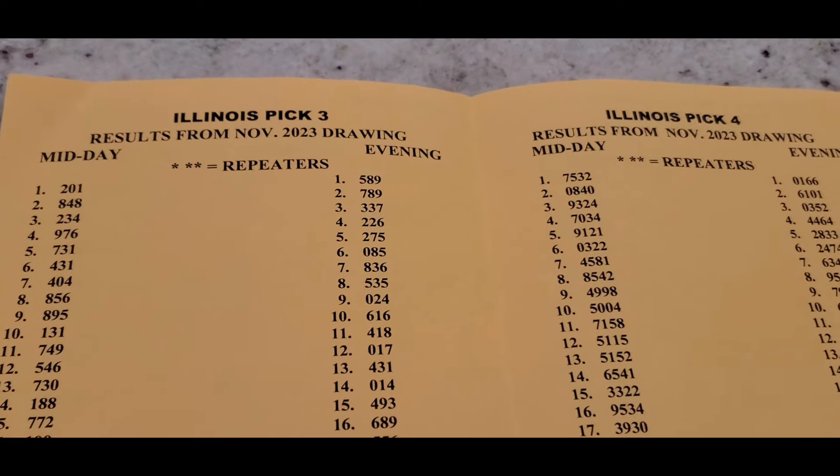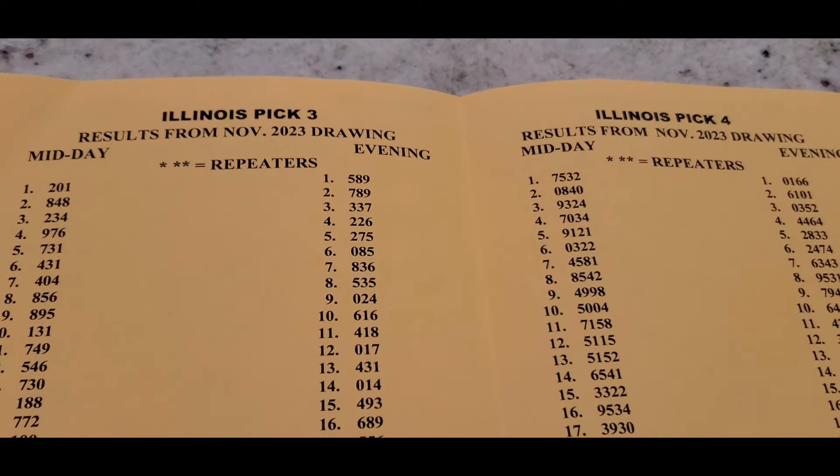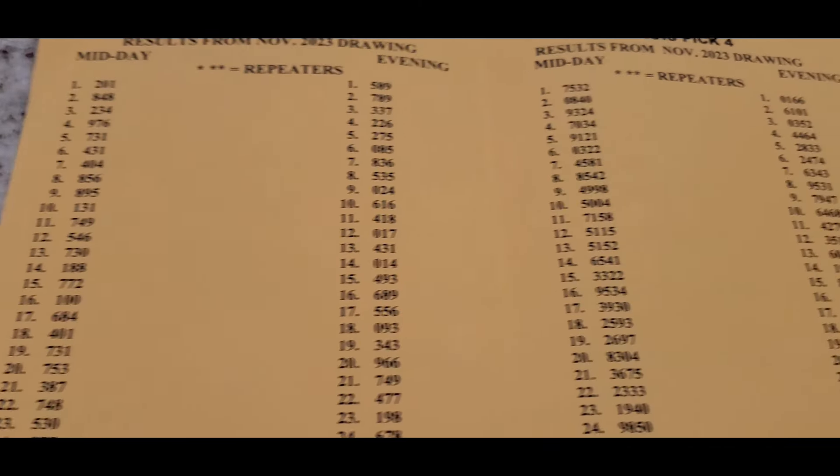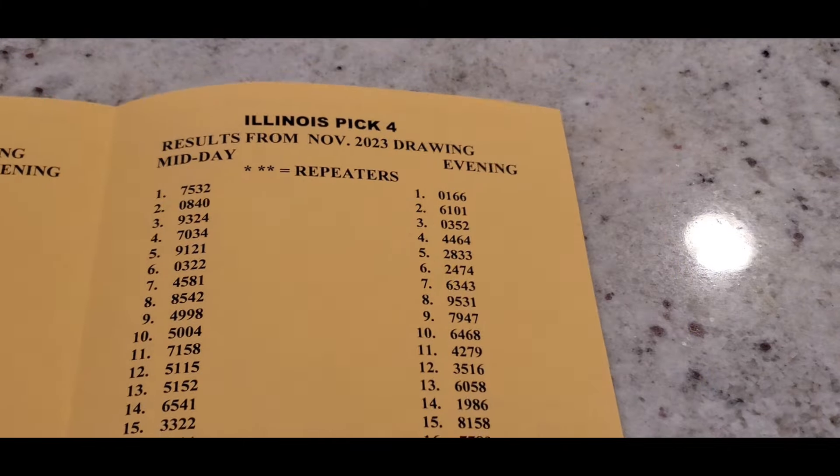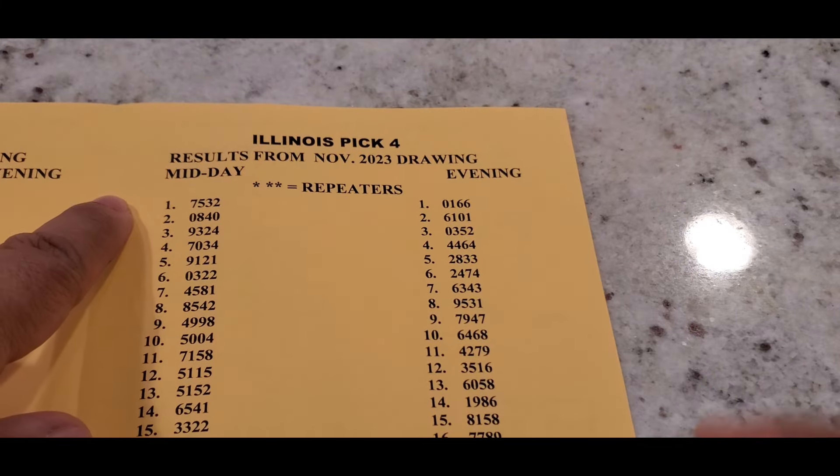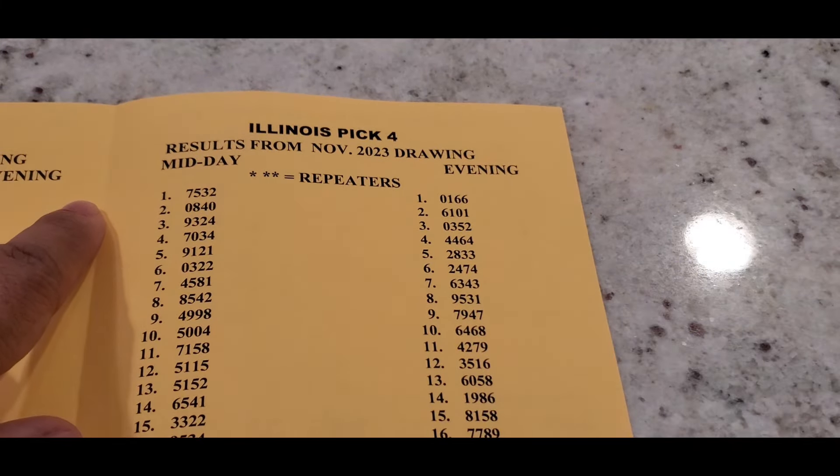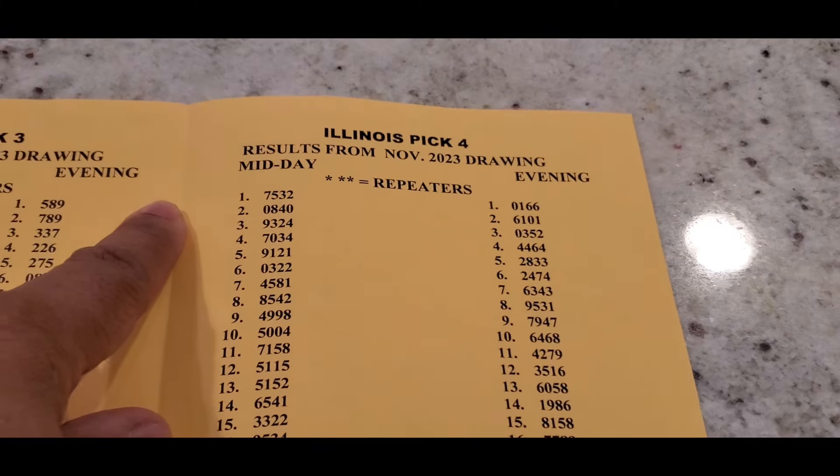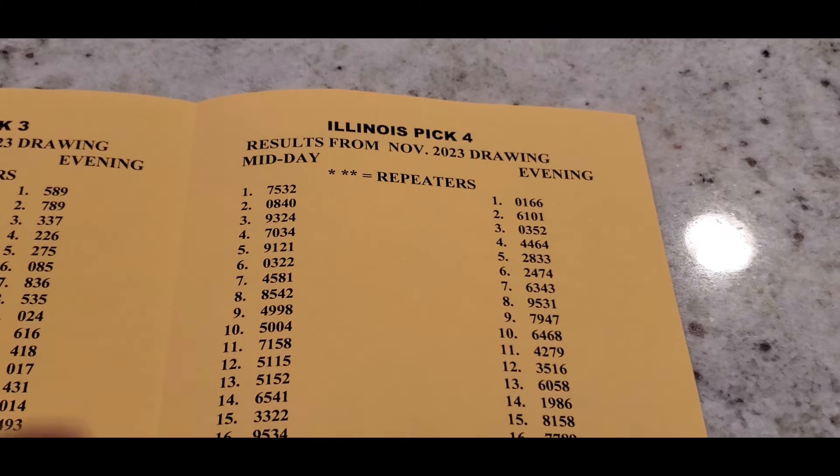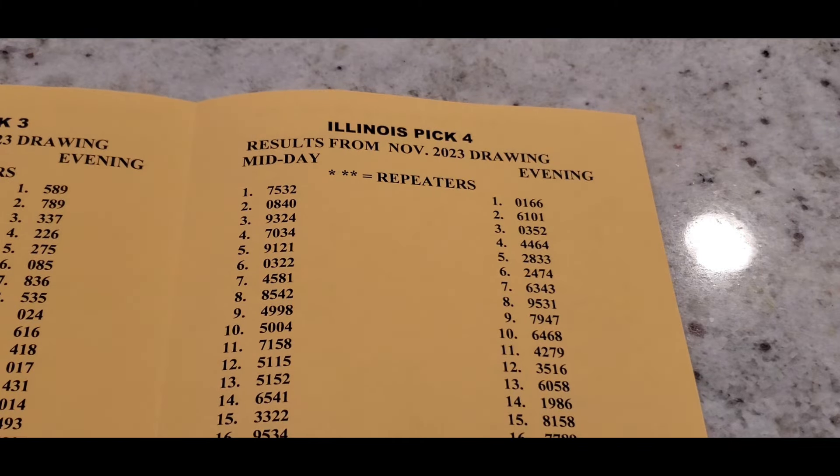You can always pause it if you need to come back and look at these. So pick four, same thing. The day numbers on the left, evening numbers on the right. So if you're catching this on November 1st, then you can go ahead and play 7532 for midday and 0166 in the evening. Second day of the month, you can go 0840, and for the evening 6101.